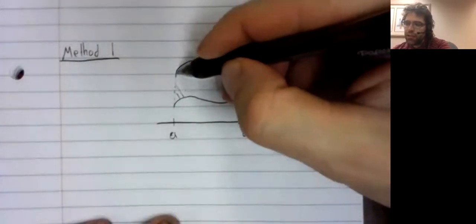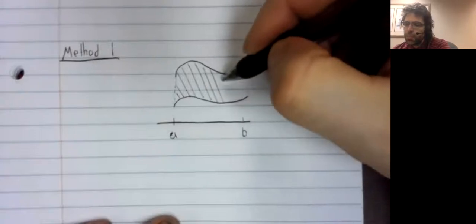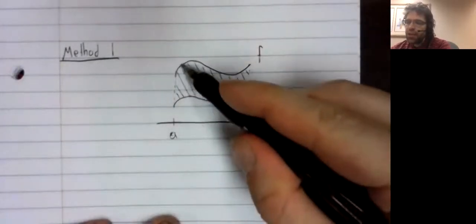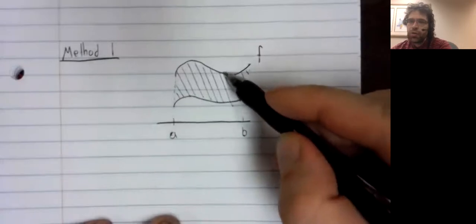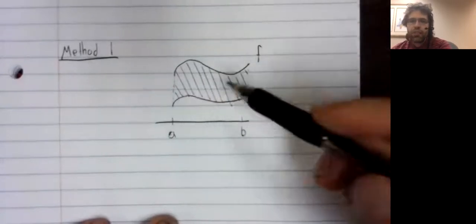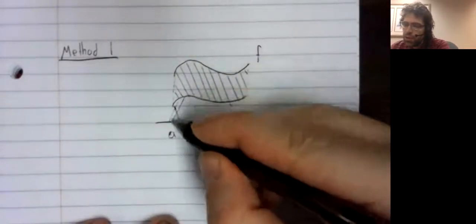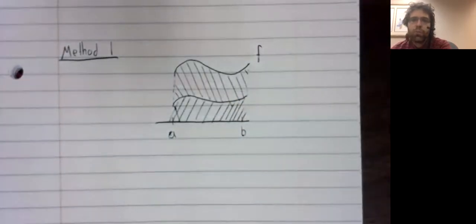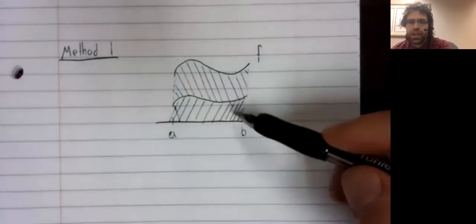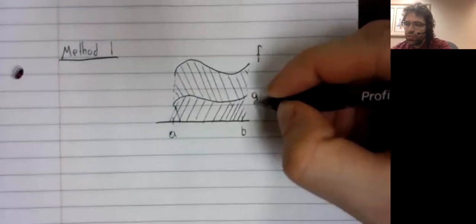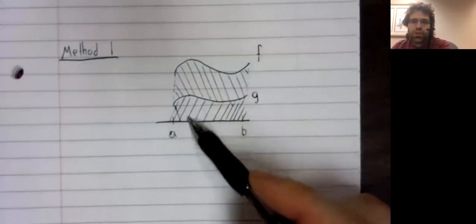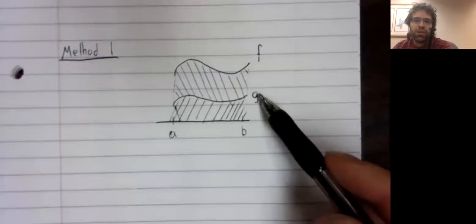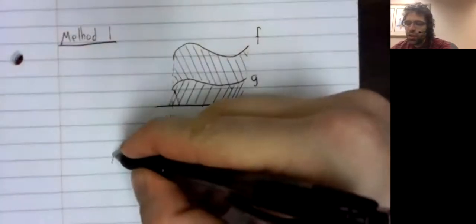We want to find the area between these two curves. Well, we can start by finding the total area under this curve. That will give us this area, but it will also give us unwanted area, this region down here that we don't want to include. And what is this unwanted area? Well, it's precisely the area below this curve. So to find the total area,